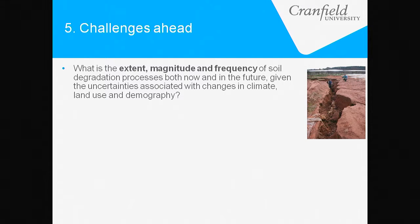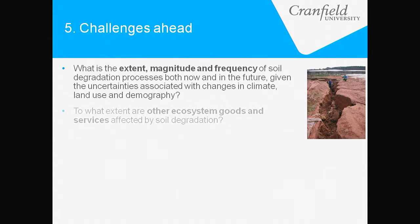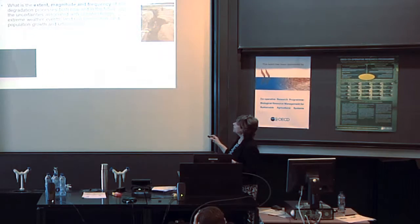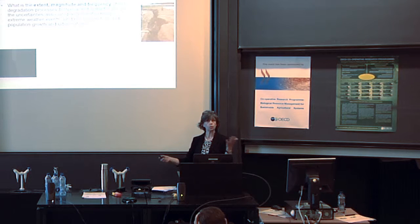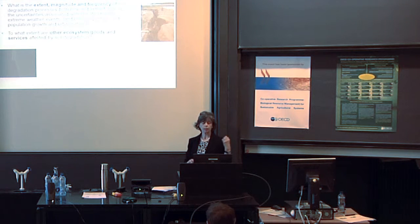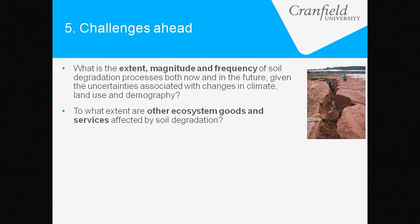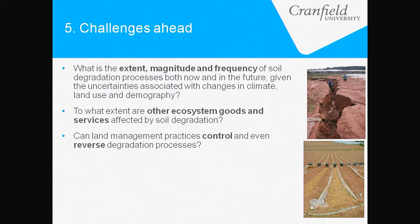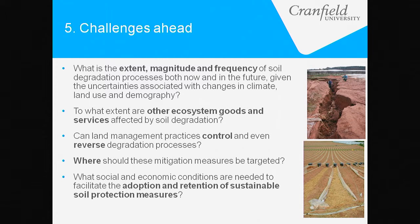In terms of policy challenges ahead: we don't really know the extent, magnitude, and frequency of soil degradation processes — not even within England and Wales, let alone globally. That's compounded by uncertainties around climate change, extreme weather events, land use competition — do we grow maize for biofuel or for feeding the population? And population growth and urbanisation. The key question is: can land management and erosion control measures actually work, where should we target them, and what social, economic, and political conditions will lead to adoption — not just for food security, but first, soil security?